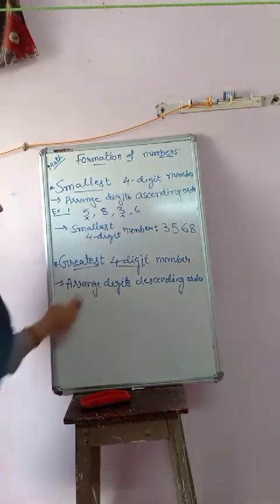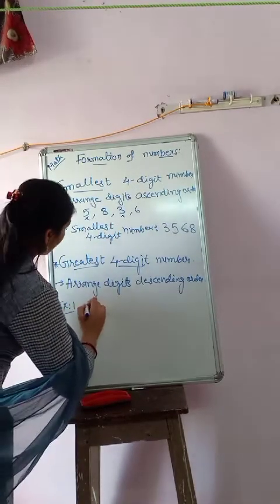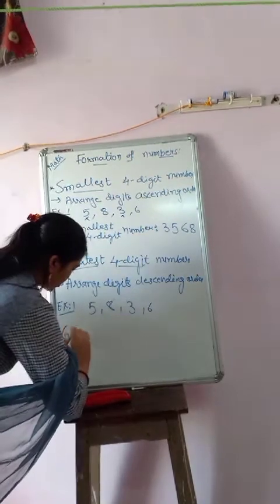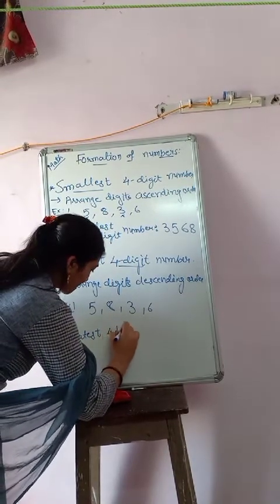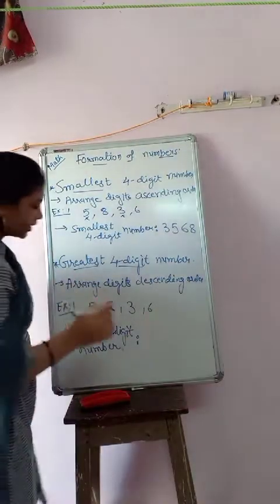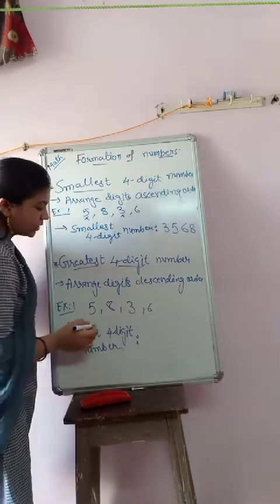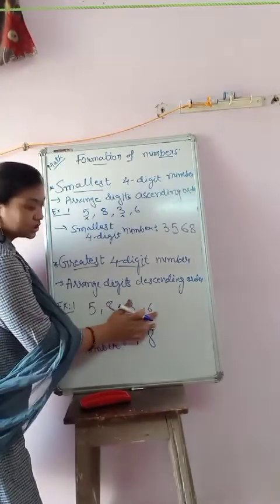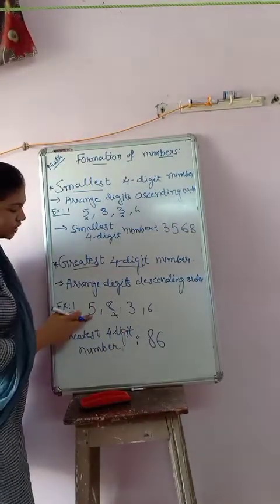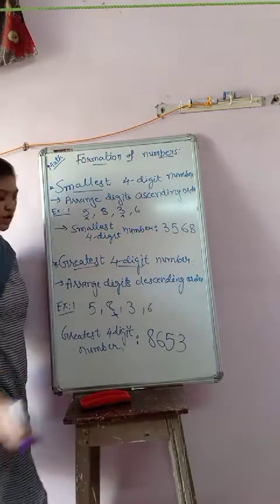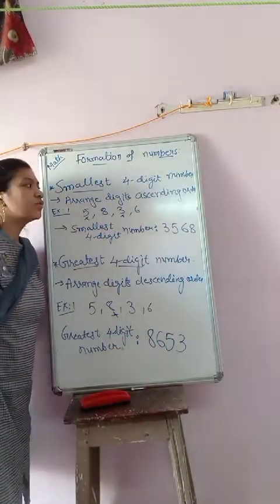I am taking the same example for the greatest four-digit number. Digits: 5, 8, 3, 6. Now you have to create the greatest four-digit number, so arrange the digits in descending order. Among them, 8 is the largest, so 8 comes first. Then from 5, 3, 6 — 6 is the largest. Then from 5 and 3 — 5 is larger than 3. So the greatest four-digit number is 8653.